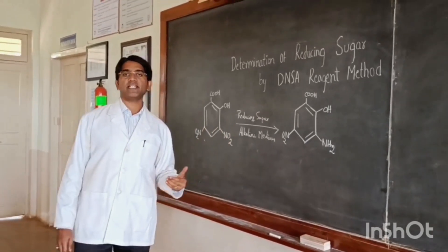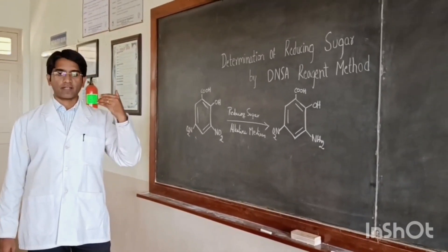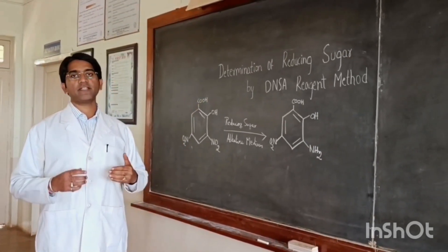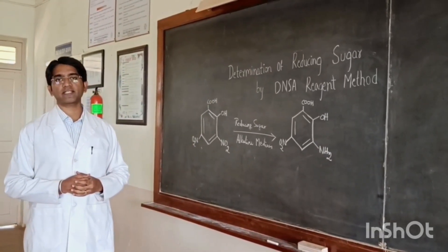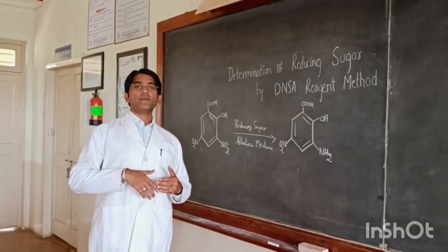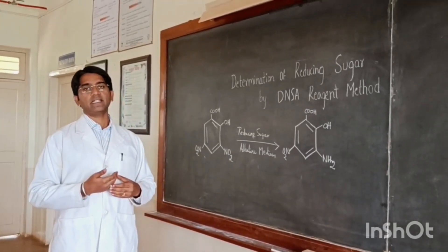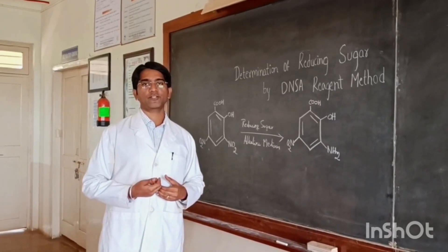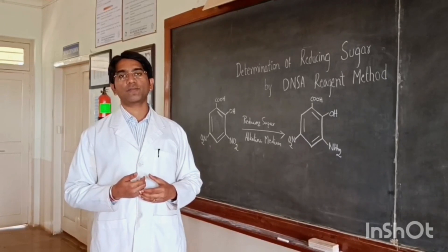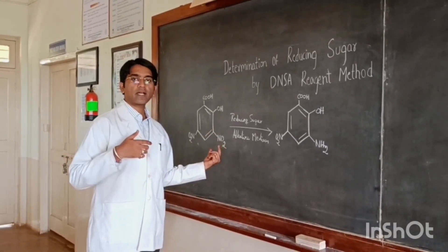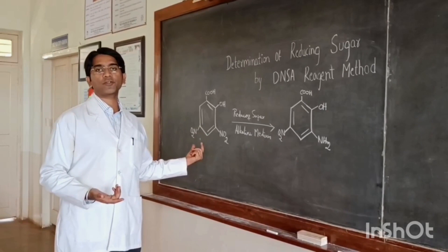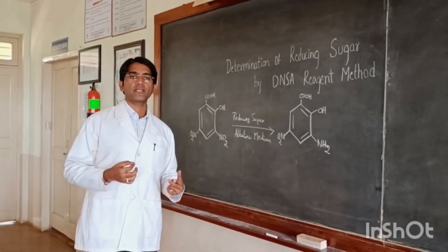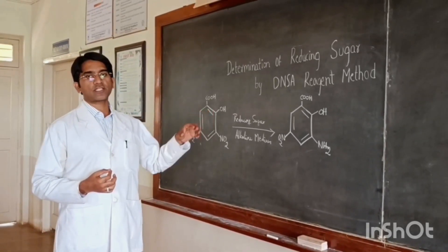The intensity of this deep red color depends on the concentration of the reducing sugar present. If more amount of reducing sugar is present in the sample, automatically there will be a more intense color, and if less, it will be less intense. In order to identify this, we make use of a colorimeter instrument. Using the colorimeter, we measure the intensity of the color produced at 600 nanometers, which helps us to know the concentration.